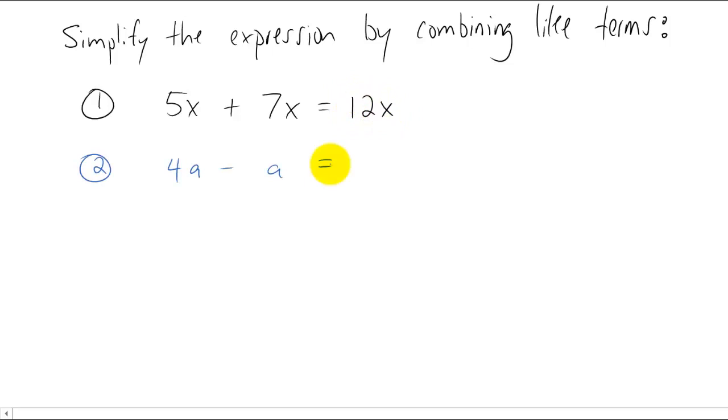As another example, how would you combine 4a - a? Well let's think of a as something like dollars. If you have four dollars and you subtract one dollar, remember there's a one coefficient in front of this. How many dollars do you have? Well I believe you have three dollars. So 4a - a is 3a.